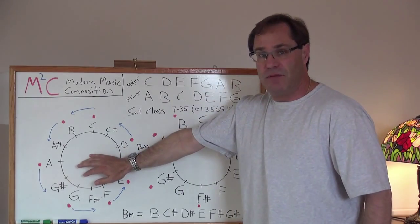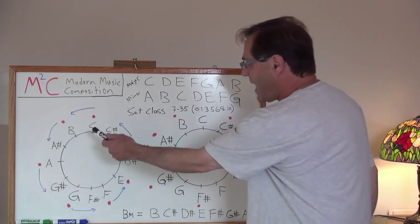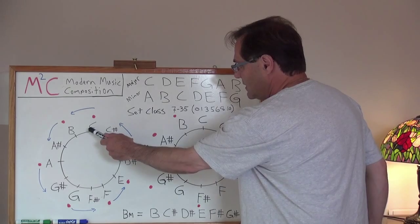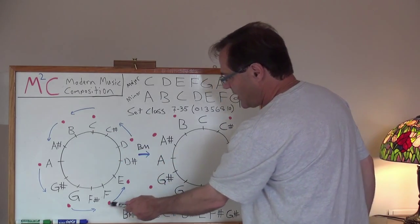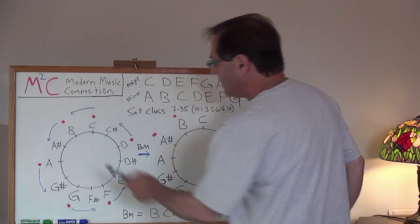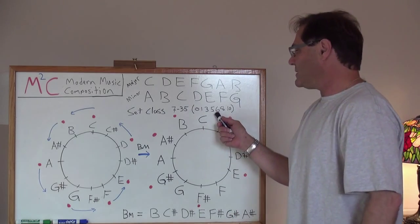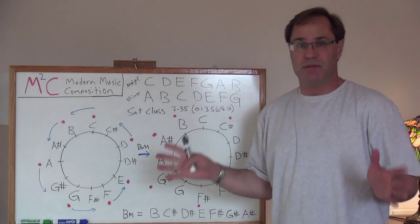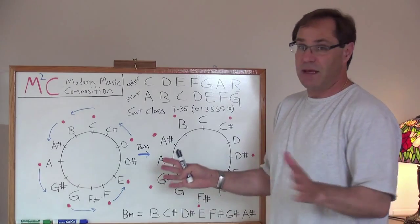This was from the previous video where we had the C major scale: C, D, E, F, G, A, B. But remember, this set class is an abstraction. So, let's be abstract.